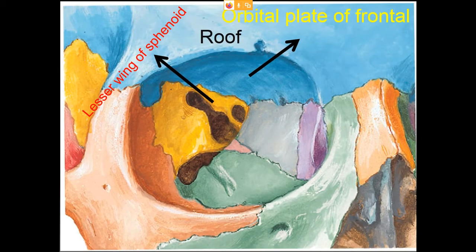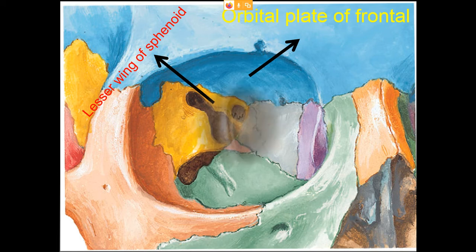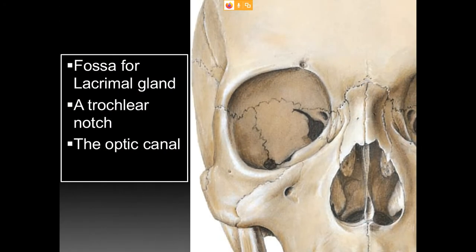Coming to the roof: the anterior part is formed by the orbital plate of the frontal bone, whereas the posterior part is contributed by the lesser wing of the sphenoid bone. On the roof we can identify the fossa for the lacrimal gland, which is present in the lateral part of the roof — a depression that lodges the lacrimal gland. Medially we can identify a notch called the trochlear notch.